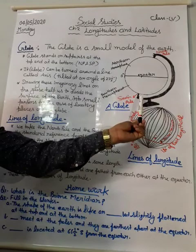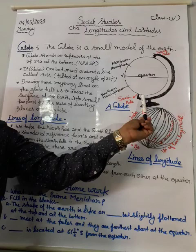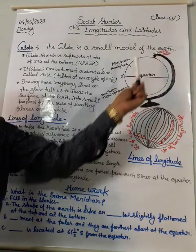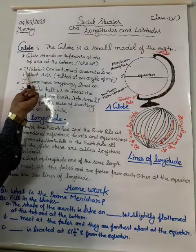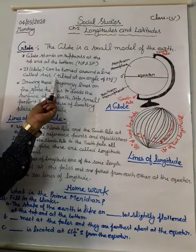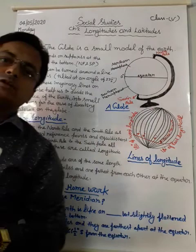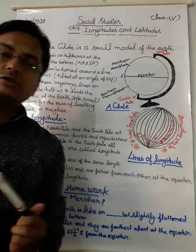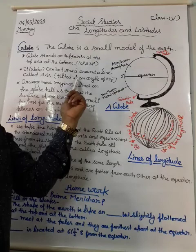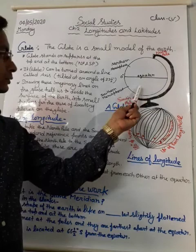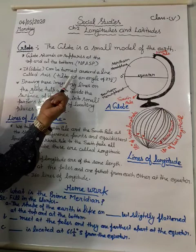A globe stands on a support. At the top is the North Pole and at the bottom is the South Pole. The globe can be turned around a line called the axis, tilted at an angle of 23 and a half degrees. This is the line on which the earth turns around, and that is called the axis.